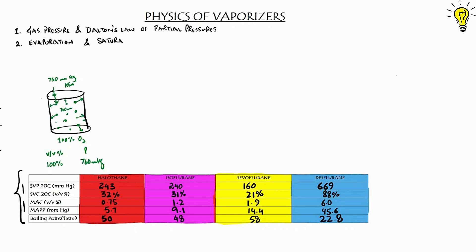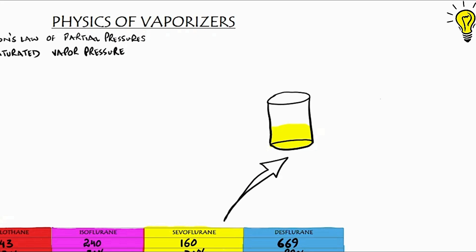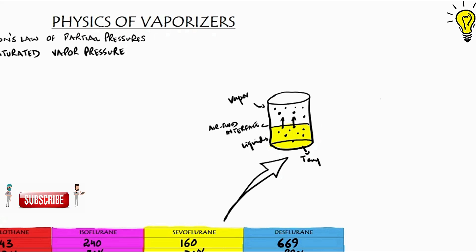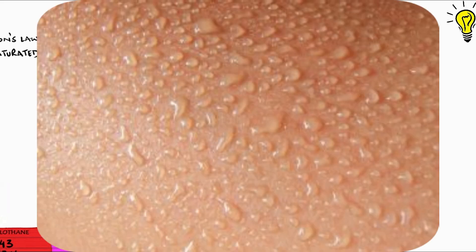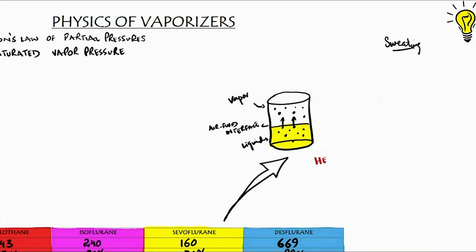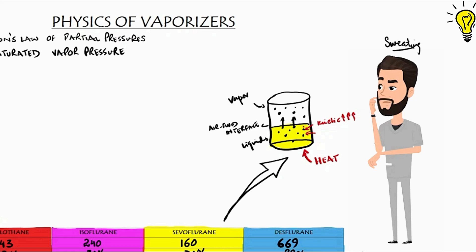The next principle to understand is evaporation and saturated vapor pressure. If we fill the chamber with sevoflurane liquid, the molecules of sevoflurane in liquid possess kinetic energy. At the air-fluid interface, this kinetic energy becomes strong enough for the molecules to overcome the liquid forces and escape as vapors into the air. But this process requires energy which is taken from the remaining fluid, so vapor formation results in a drop of temperature of the remaining fluid — just like when sweat vaporizes off our skin surface, the process of vaporization pulls away heat and energy from the skin. This is why our skin gets colder after the sweat vaporizes.